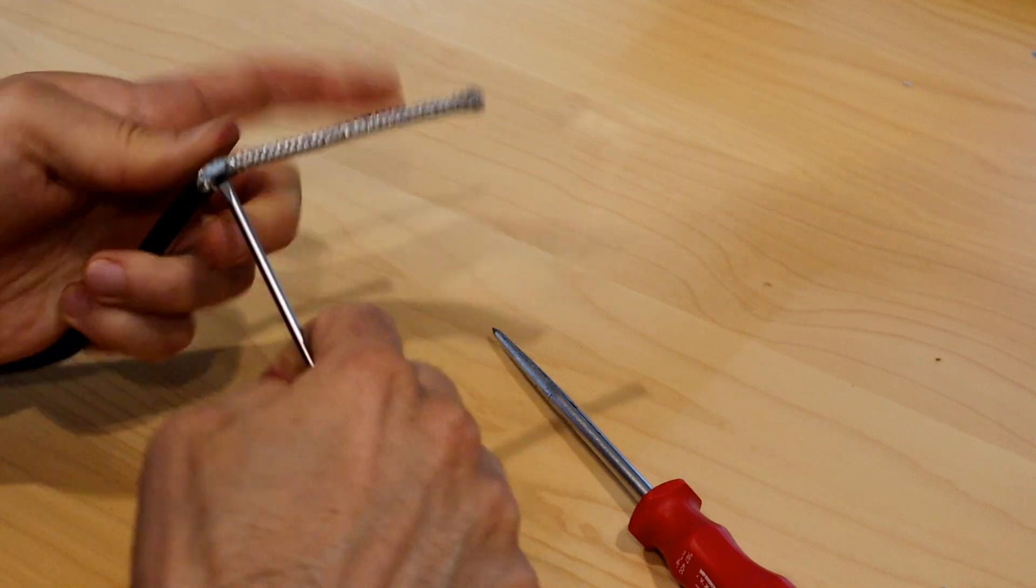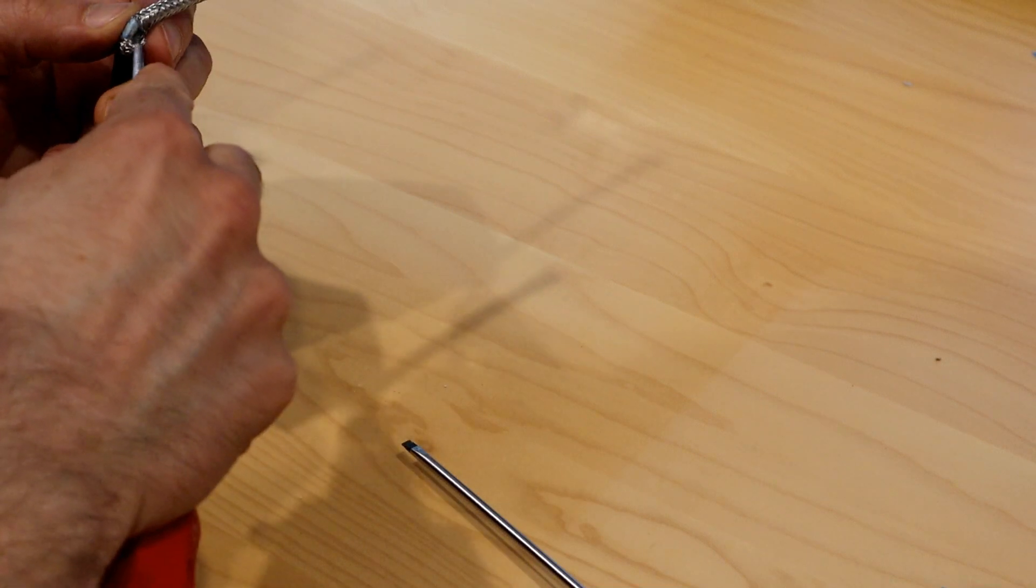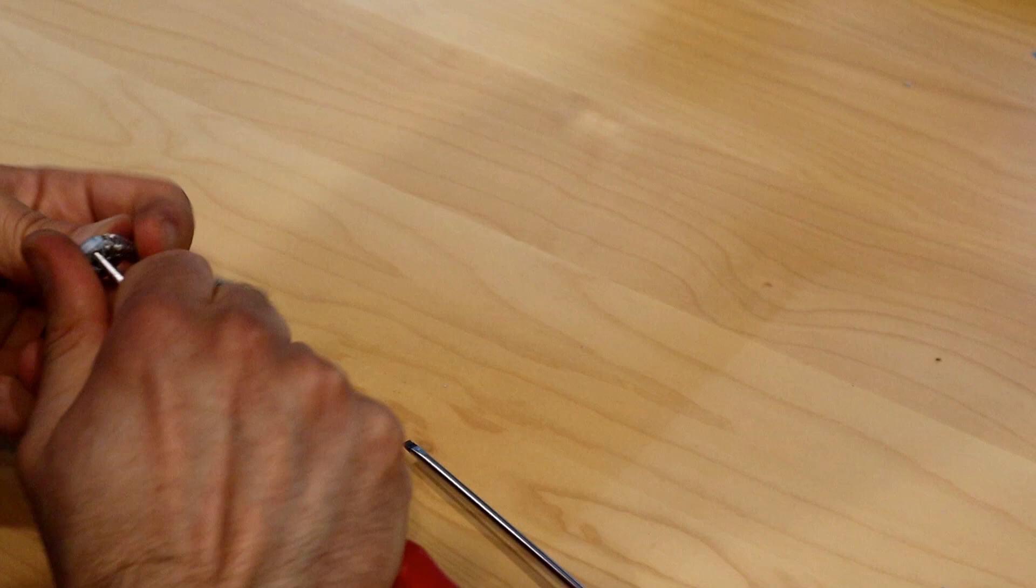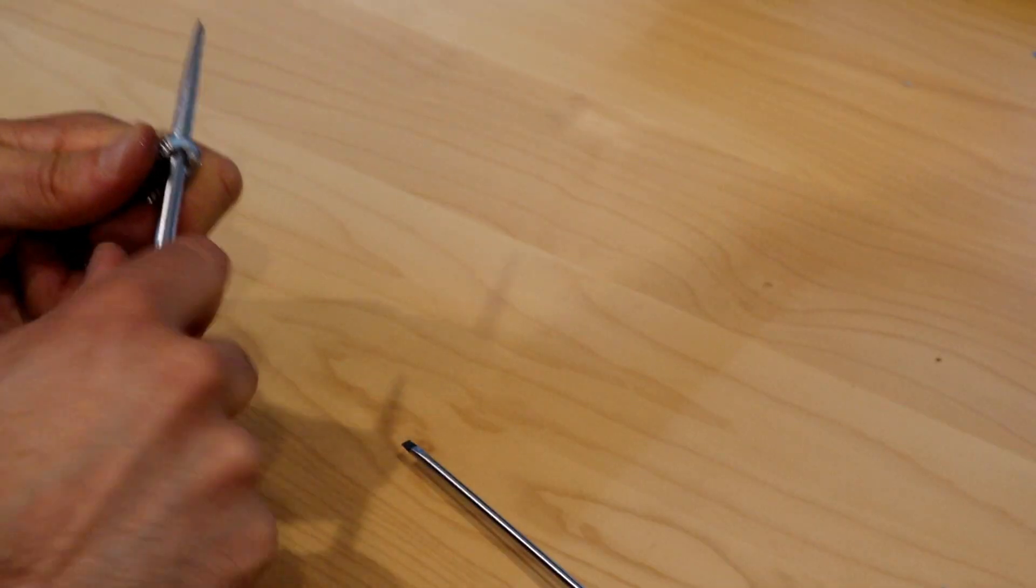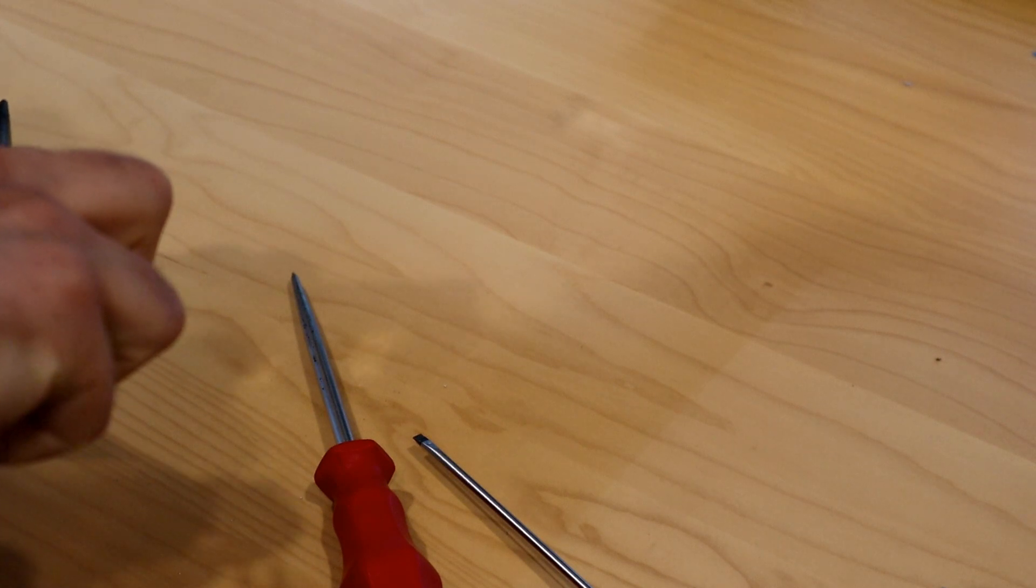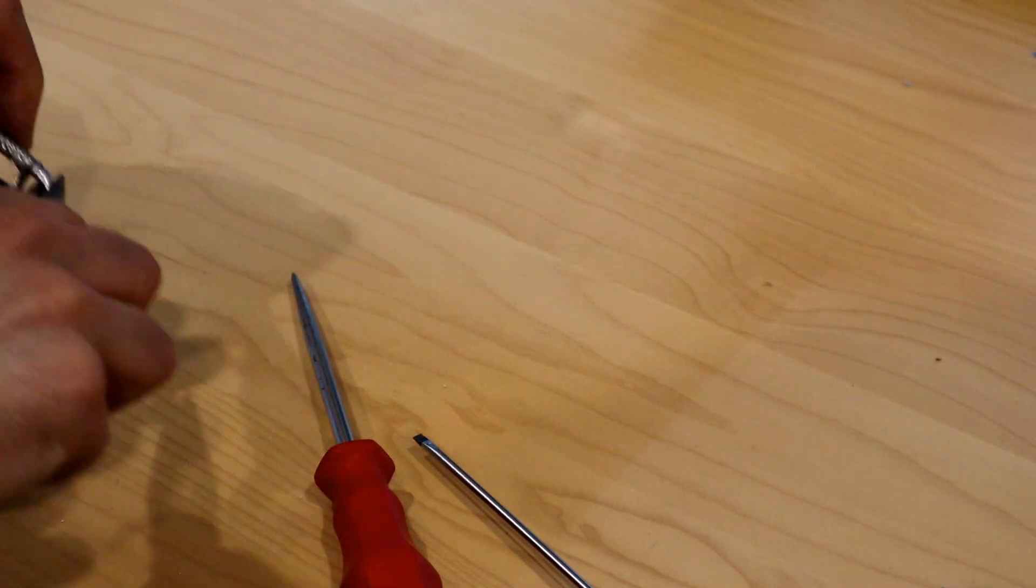Now go underneath and fish the core out through the hole. The pliers can help to get the core all the way pulled out.